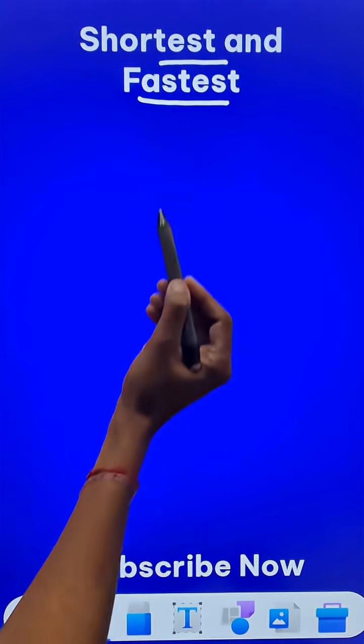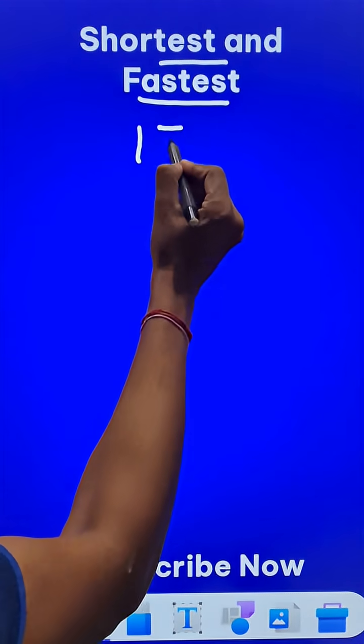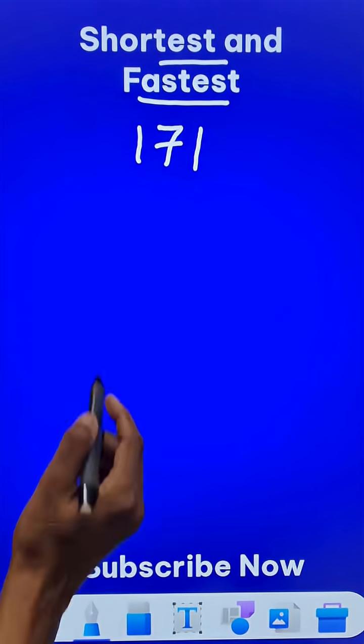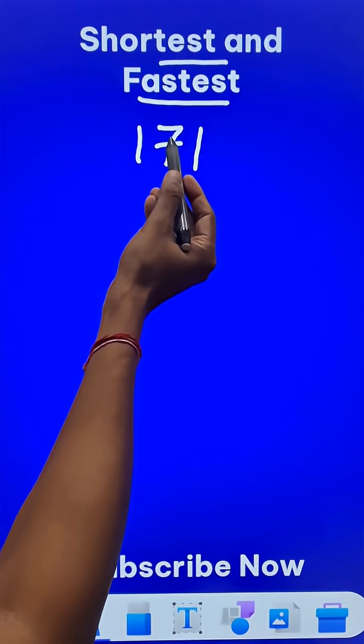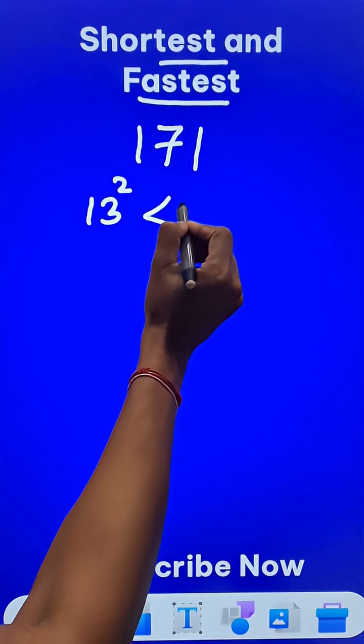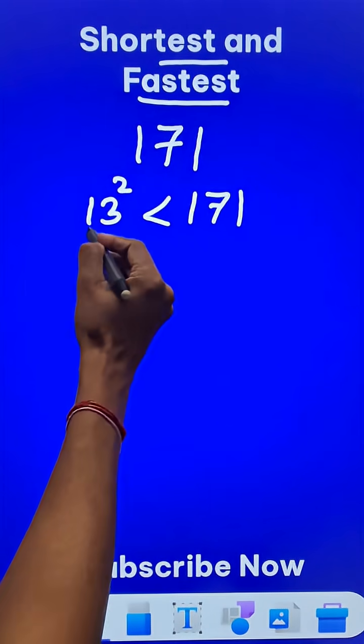Here is the shortest and fastest trick to find whether 171 is prime or not. We just need to find the perfect square which lies just below 171. We know that 13 squared, which is 169, is very close to 171 and just below it.